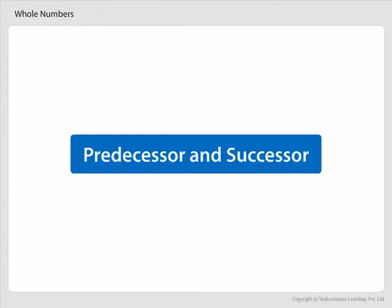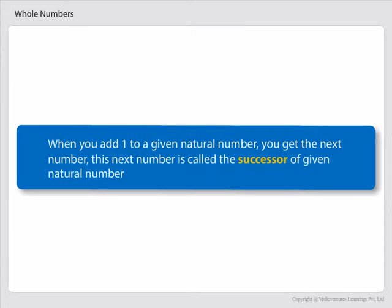Let us see the predecessor and successor of a number. When you add 1 to a given natural number, you get the next number. This next number is called the successor of the given natural number.